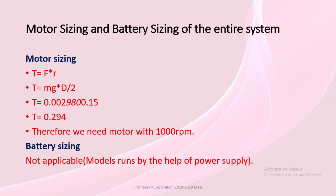Next we have motor sizing and battery sizing. By motor sizing we determine the specification of the DC motor to be used. This is found by calculating the torque, which equals force times radius, where the force experienced by the drill bit is gravitational force. Thus torque equals gravitational force times radius, which is half the diameter. The torque obtained is 0.294 Newton-meters, therefore we need a motor with 1000 rpm. Battery sizing is not applicable as our system runs on a power supply.